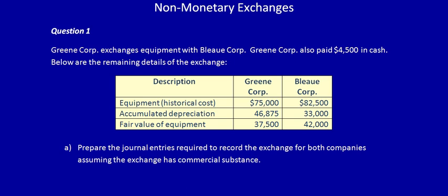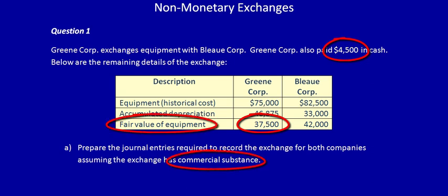What did Green give up? The total amount they gave up to get the new equipment would include the fair value of the old equipment and the cash paid. We're going to use fair value because this exchange is with commercial substance. The cash paid is added because it's part of what the company had to give up in order to get the new equipment.